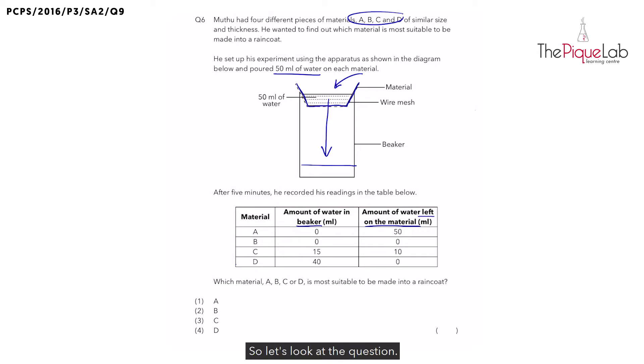So let's look at the question. Which material, A, B, C or D, is most suitable to be made into a raincoat? Now, if this person wants to make a raincoat, do we want a raincoat to allow water to seep through it? No, right?